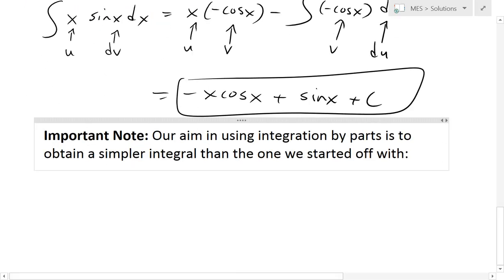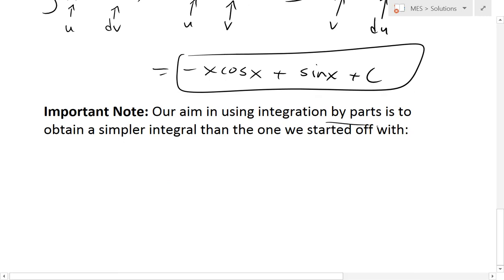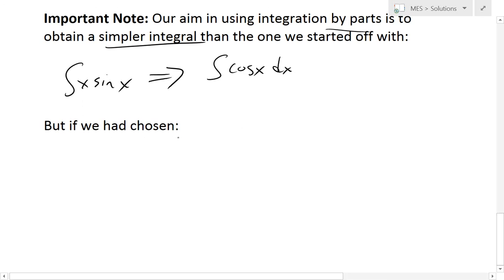Now an important note on integration by parts: our aim is to obtain a simpler integral than the one we started off with. For example, we started off with x sin(x), and then we broke it down to dealing with an integral of cos(x) dx, which is easier to solve.